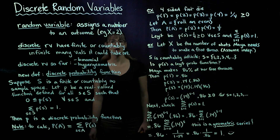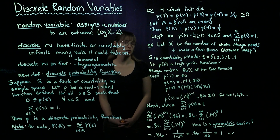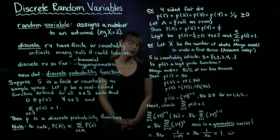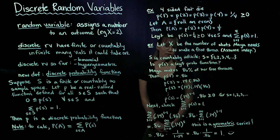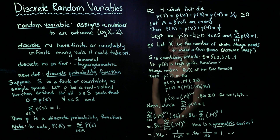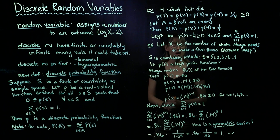Hello. In this video, we're going to continue talking about discrete random variables. Random variables are variables that are random, and what they do is assign a number to an outcome.